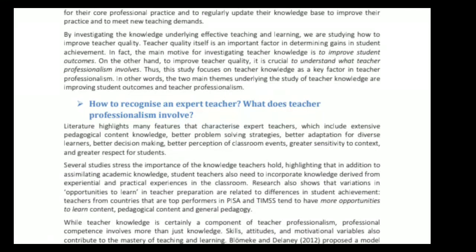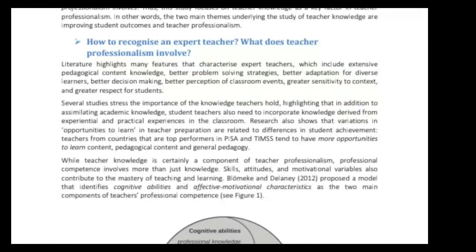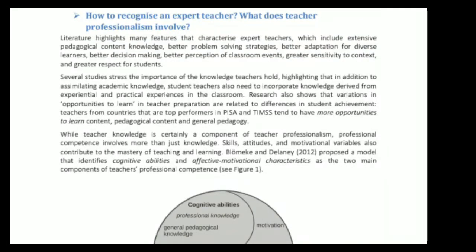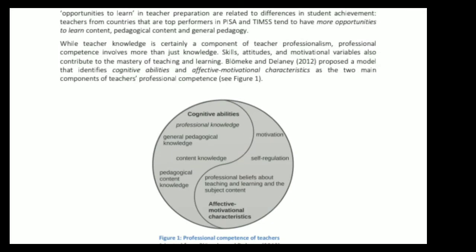By investigating the knowledge underlying effective teaching and learning, we are studying how to improve teacher quality. Teacher quality itself is an important factor in determining gains in student achievement. In fact, the main motive for investigating teacher knowledge is to improve student outcomes. To improve teacher quality, it is crucial to understand what teacher professionalism involves. Thus, this study focuses on teacher knowledge as a key factor in teaching professionalism. The two main themes underlying the study are improving student outcomes and teacher professionalism.